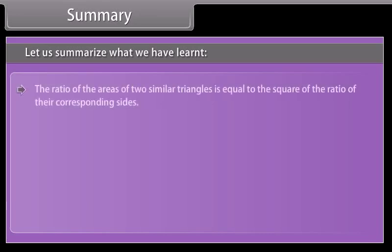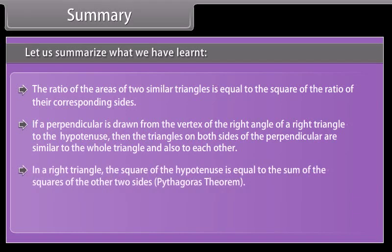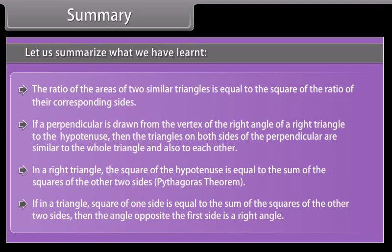Summary. Let us summarize what we have learnt. The ratio of the areas of two similar triangles is equal to the square of the ratio of their corresponding sides. If a perpendicular is drawn from the vertex of the right angle of a right triangle to the hypotenuse, then the triangles on both sides of the perpendicular are similar to the whole triangle and also to each other. In a right triangle, the square of the hypotenuse is equal to the sum of the squares of the other two sides (Pythagoras theorem). If in a triangle the square of one side is equal to the sum of the squares of the other two sides, then the angle opposite the first side is a right angle (converse of Pythagoras theorem).